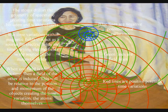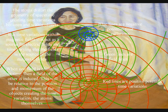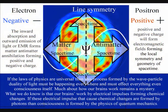If the laws of physics are universal, then this process formed by the wave-particle duality of light must be happening everywhere and must affect everything, even consciousness itself.